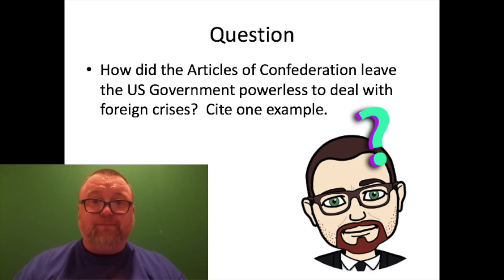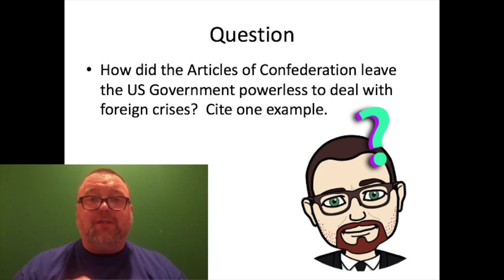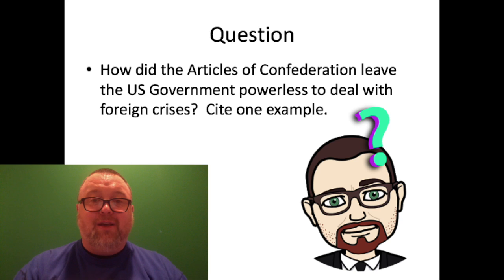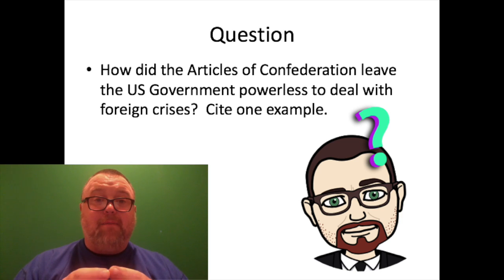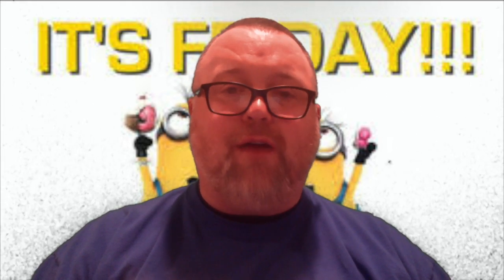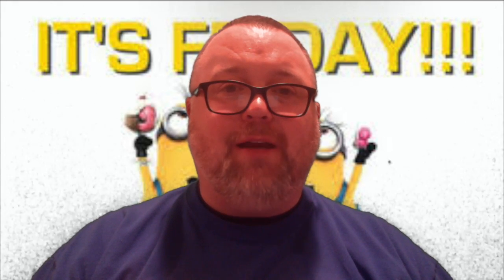For your assignment, give me an explanation of how the Articles of Confederation left the U.S. government powerless to deal with foreign crises, and cite at least one example from what we've talked about or from your own research. You can post that as a comment or, even better, put it in your assignment for Day Five. Thanks for watching — have a fabulous Friday, my friends. Congrats again on a strong first week; it's going to get better and easier from here. Proud of all of you — have a good one.